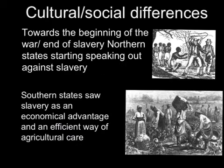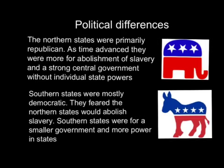In the early 1860s, the Northern states started to frown upon the act of slavery, while the Southern states still used slavery prevalently on plantations. Northern states were more Republican and were more for the abolishment of slavery towards the Civil War, and they believed in a strong central government with little state power. Whereas Southern states were more Democratic, feared that the Northern states would abolish slavery, and were for smaller, more individual power by the states.